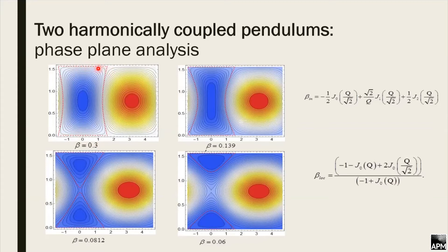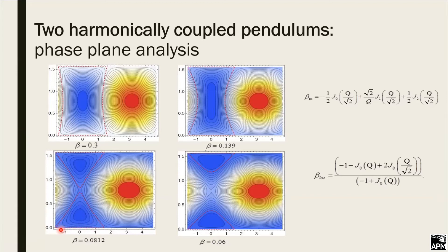We observe the evolution of the phase plane as we decrease the coupling parameter. First, two new stationary points appear — these are the localized nonlinear normal modes of the system. However, their appearance does not globally change the phase space. Only when the separatrix and the limiting phase trajectory collide does a critical transition occur: with initial conditions where all the energy is on one pendulum, the energy will not transfer to the second pendulum. We call this state the dynamical localized state.